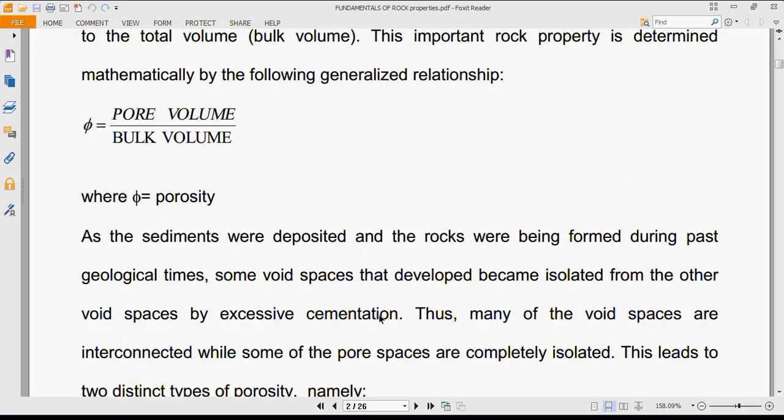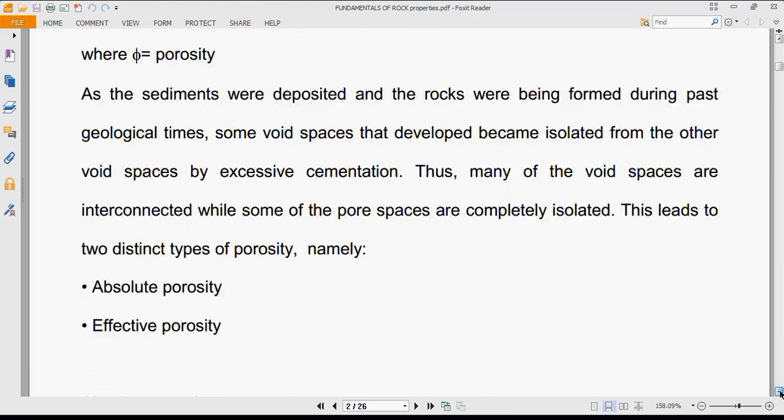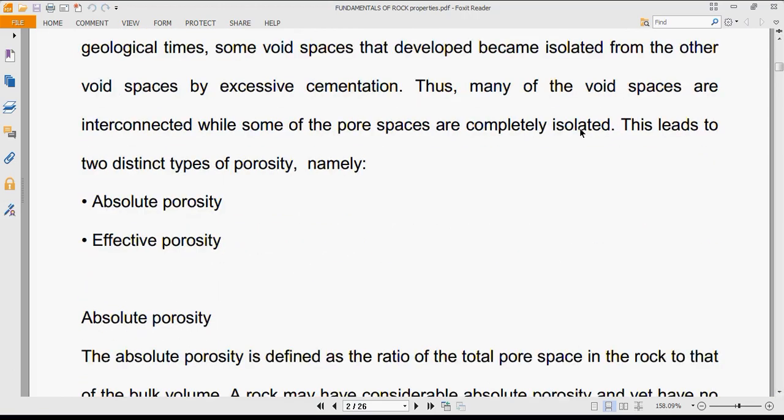φ of cementation - when rocks are deposited, they're deposited with cementing material that binds the grains together to form rock. Some rocks have strong cementation, so many void spaces are interconnected while some other void spaces are completely isolated. This leads us to classify porosity into two types: absolute porosity and effective porosity.